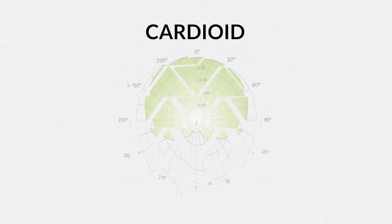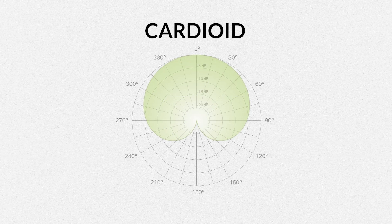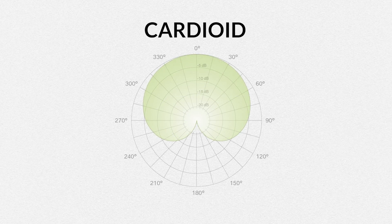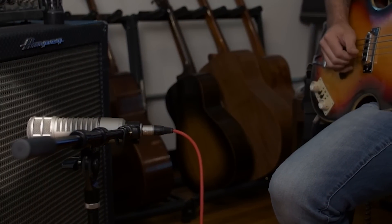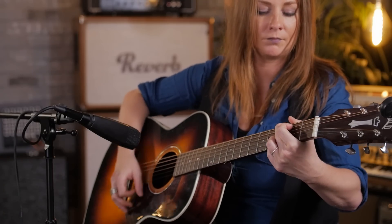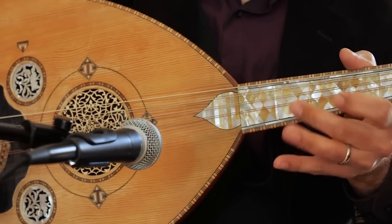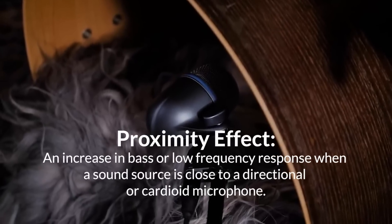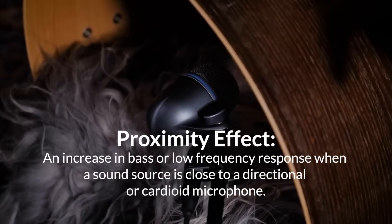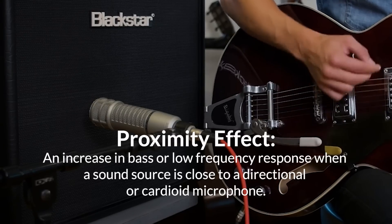We're going to start with the cardioid polar pattern. You can remember its name because it's shaped like an upside-down heart. They capture sound from the front, but reject sound from the rear. Most dynamic microphones use the cardioid polar pattern, which is the most common and used for most applications. This pattern responds aggressively to proximity effect, picking up more low or bass frequencies when the source is closer to the microphone. You can use cardioid polar patterns to prevent unwanted noise and noise bleed, which is why it's most commonly used in live applications. It's great for close micing multiple instruments, but isn't necessarily ideal for room mics.